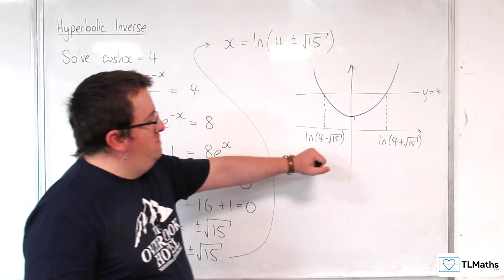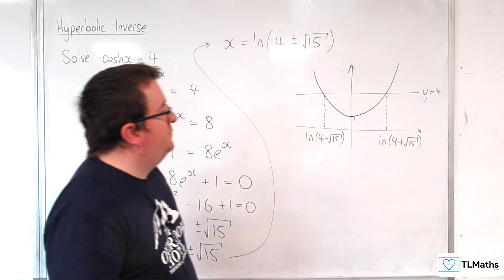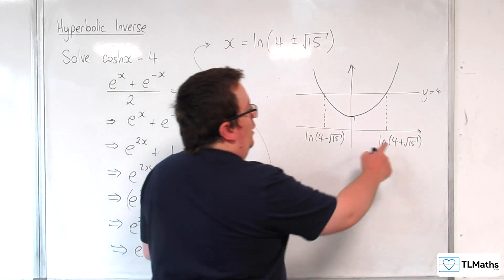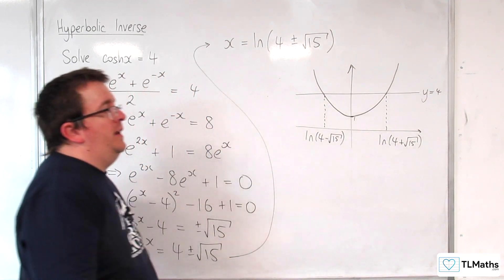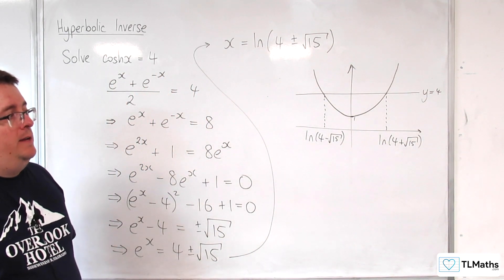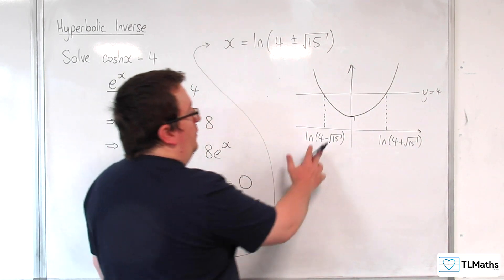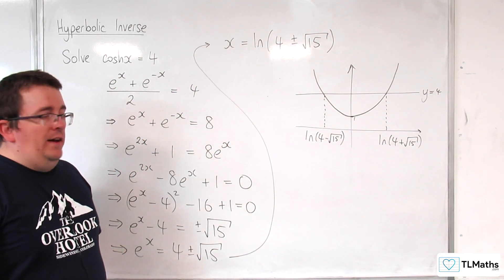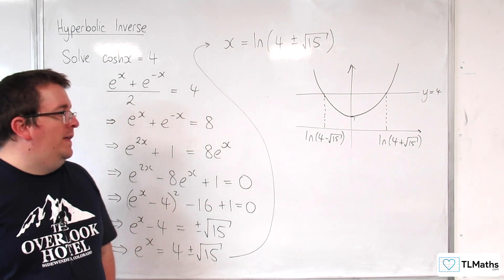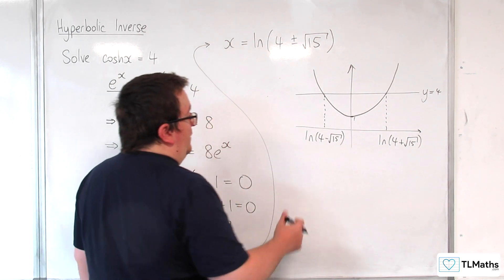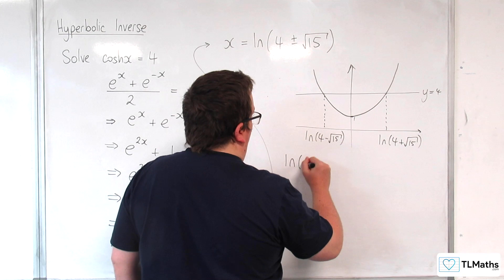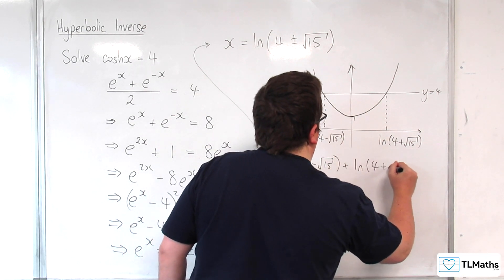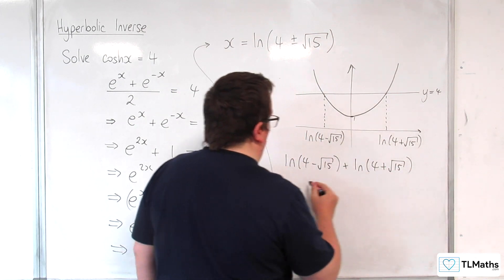Now, the important point here is that actually what we're getting is that log of 4 plus root 15 must be the negative of log of 4 minus root 15, and vice versa. Now that's not immediately obvious as to why that would be the case. So if we add them together, log of 4 minus root 15 plus log of 4 plus root 15, this should be equal to 0.